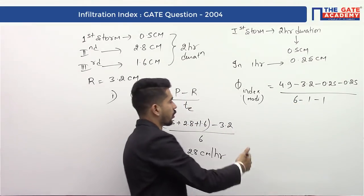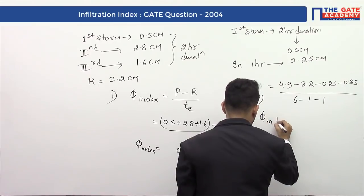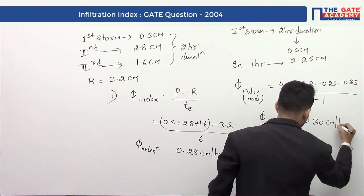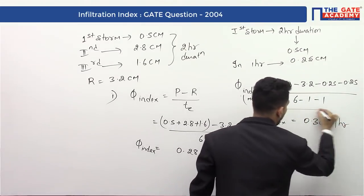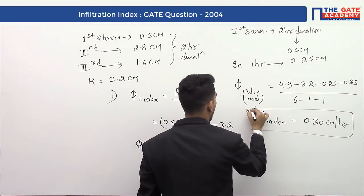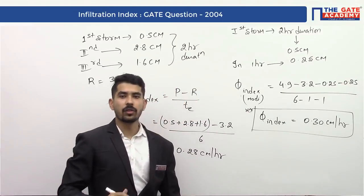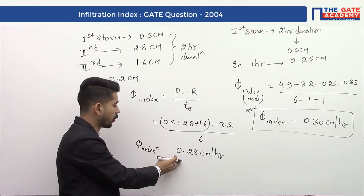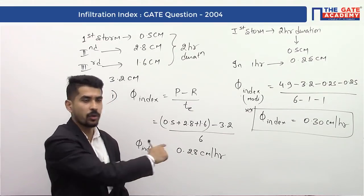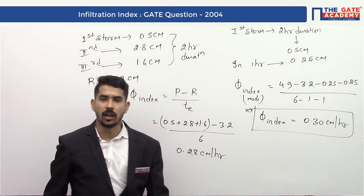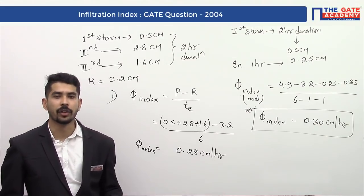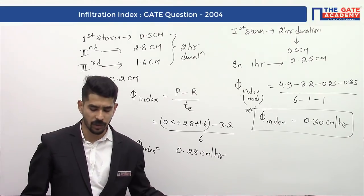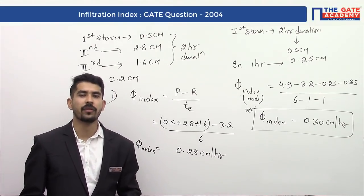So the final value of phi index comes out to be 0.30 centimeters per hour. We have to be careful not to directly accept the first rough value; we must always check whether runoff is actually occurring in each time period and modify the phi index accordingly. This was the question from K2004 — thank you.